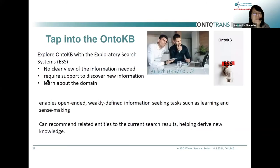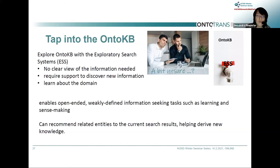You can tap into OntoKB, and our team in Vienna is developing an exploratory search system. With SPARQL queries, good information makes for better search results, but sometimes you don't have a clear view or require support to discover new information — you just want to learn about a domain. The exploratory search system, ESS, allows open-ended, weakly-defined information-seeking tasks: learning something, making sense of what's there. It can recommend related entities to current search results, and with more information, you can derive more knowledge.